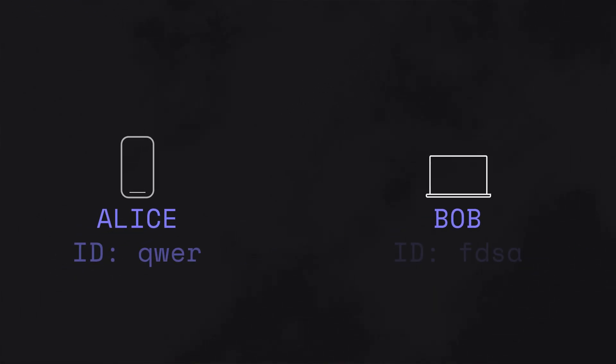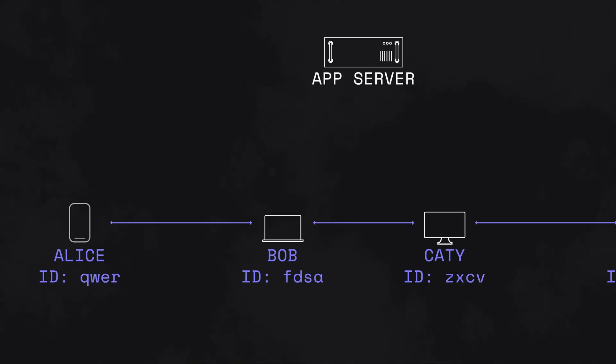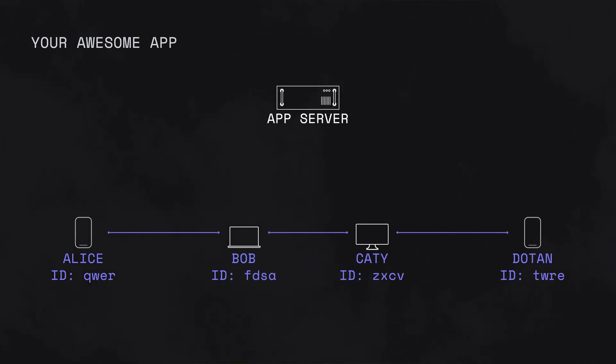Any device that you want to talk to gets a Node Identifier. From any other device, you plug in that Identifier, hit Dial, and if the device is online, you'll get an end-to-end encrypted connection. From there, you get to do anything you'd want to do with a connection between two devices.